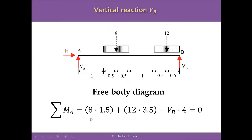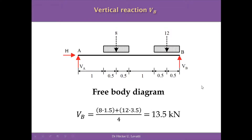The summation of moments around point A equals 8 kN × 1.5 m (positive, clockwise) plus 12 kN × 3.5 m (positive, clockwise) minus VB × 4 m, all equal to zero. Solving this equation, the reaction VB at point B is equal to 13.5 kN, acting upward as expected.